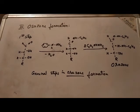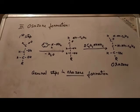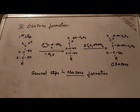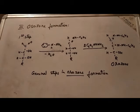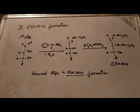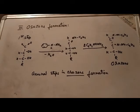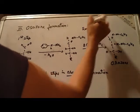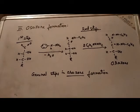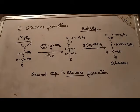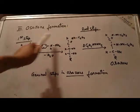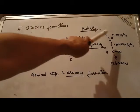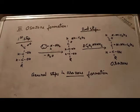The use of the osazone reaction with D-glucose and D-mannose demonstrates that these compounds differ in configuration only at carbon number 2. The mechanism involves two steps — the first step and the second step — each of which forms one of the phenylhydrazine functionalities. In the first step we get one phenylhydrazine functionality, and in the second step we get one more at carbon number 2.